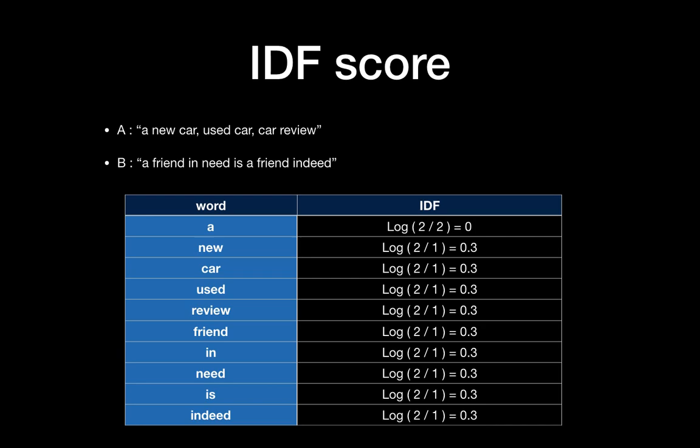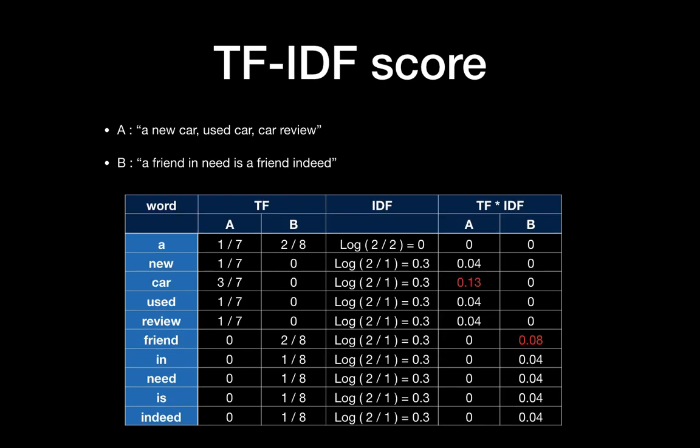Here is an example of the IDF score. We have two documents: Document A is 'a new car used car car review' and Document B is 'a friend in need is a friend indeed.' Since 'a' appears in both documents, its IDF score is log(2/2) = 0. For 'new,' it appears in only one document, so the IDF score is log(2/1) = 0.3. The TF-IDF score is simply TF multiplied by IDF.